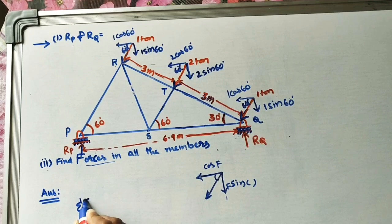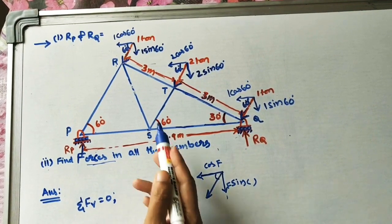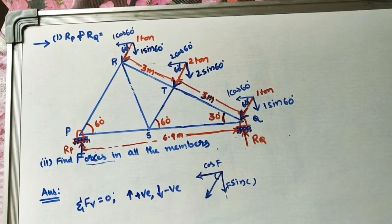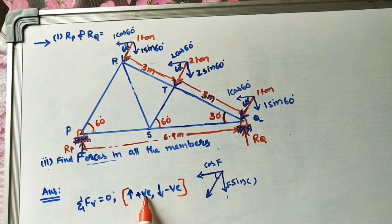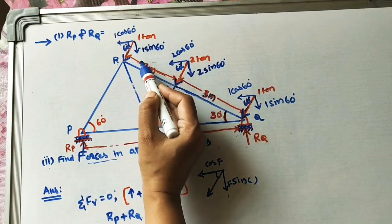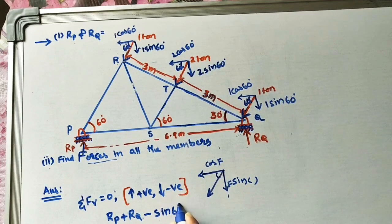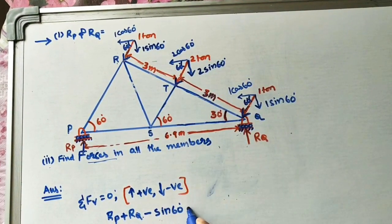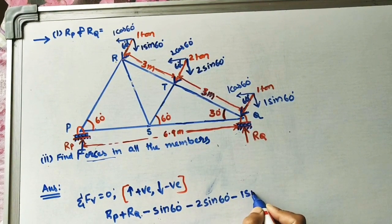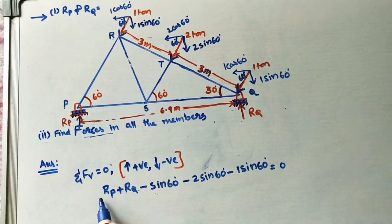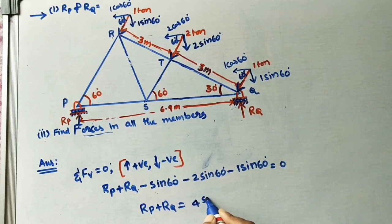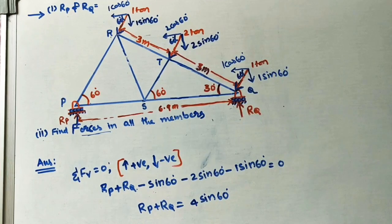Applying Sigma FV = 0, taking upward forces as positive and downward as negative: Rp + Rq minus 1 sin 60 minus 2 sin 60 minus 1 sin 60 = 0. Moving the reaction terms to the left-hand side, Rp + Rq = 4 sin 60. This is Equation 1.